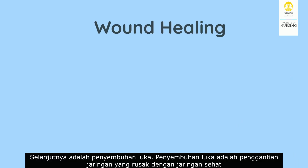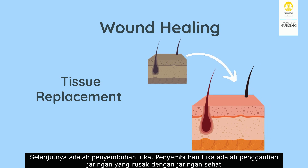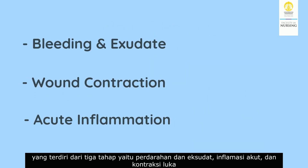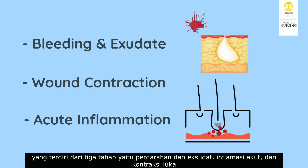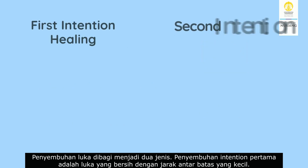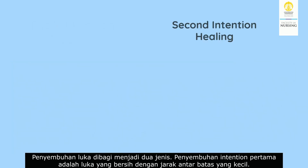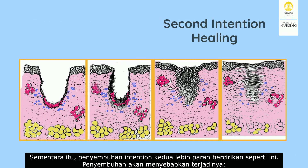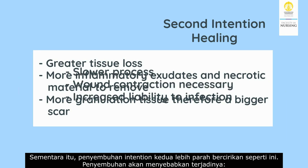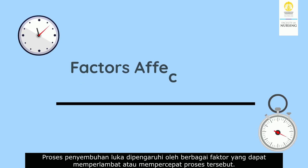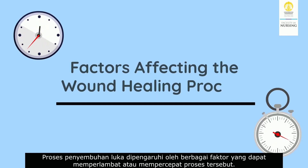Next is wound healing, which is the replacement of damaged tissue by healthy tissue, consisting of three stages: bleeding, inflammation, and wound contraction. Wound healing is divided into two types. First intention healing involves a clean wound with a small distance between the boundaries, while second intention healing has more severe characteristics and results in greater scar formation. The wound healing process is influenced by various factors that can slow or speed up the process.